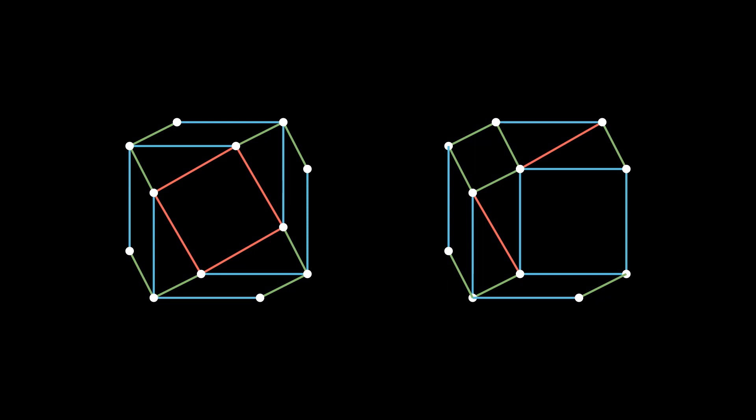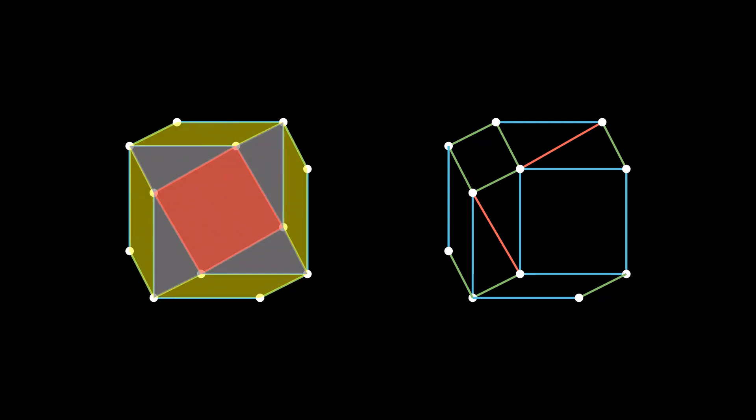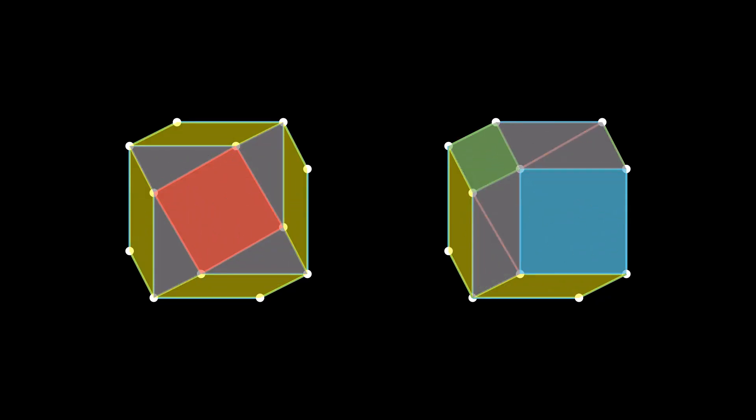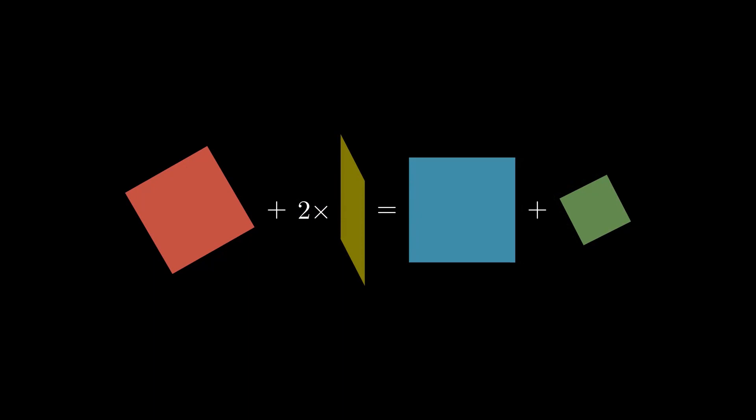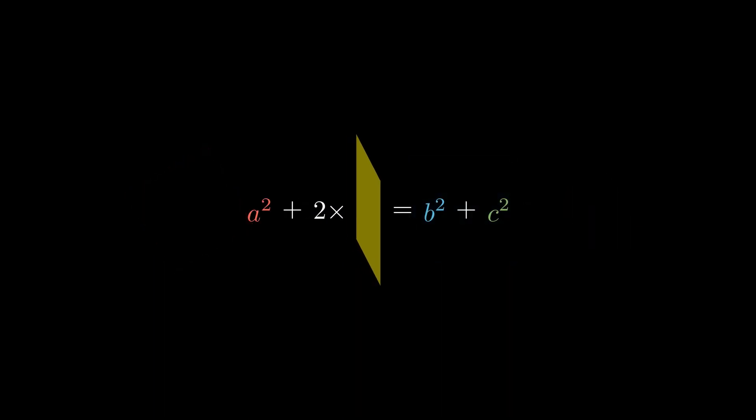So what's the equation we get from this image? Let's take a look at the areas again. We have a squared, b squared, and c squared, as before. The triangles all cancel again, as well as two of the parallelograms. All that's left to do now is to find the area of this parallelogram.